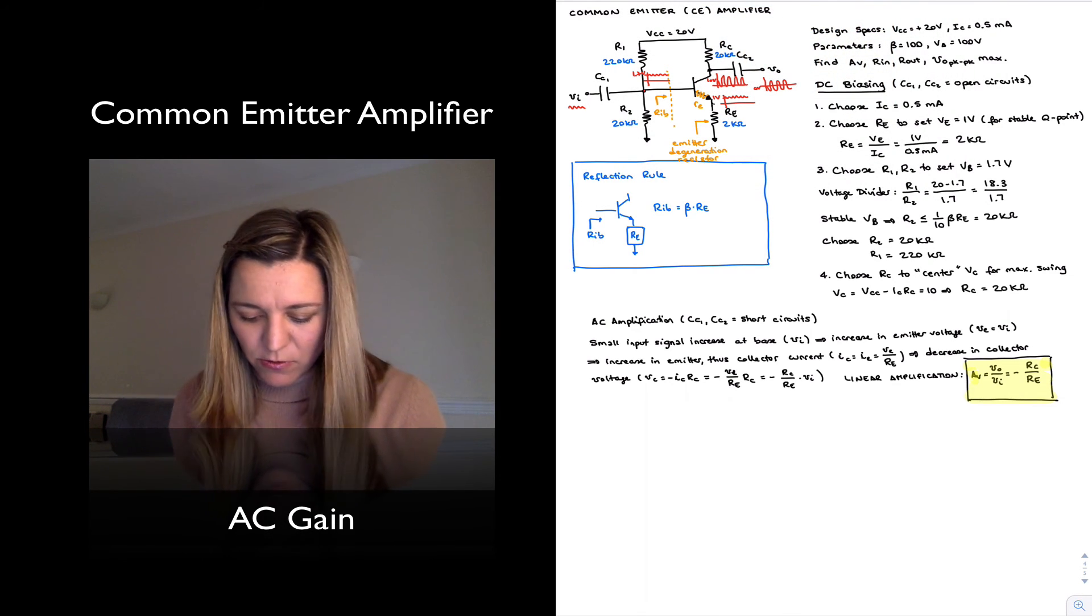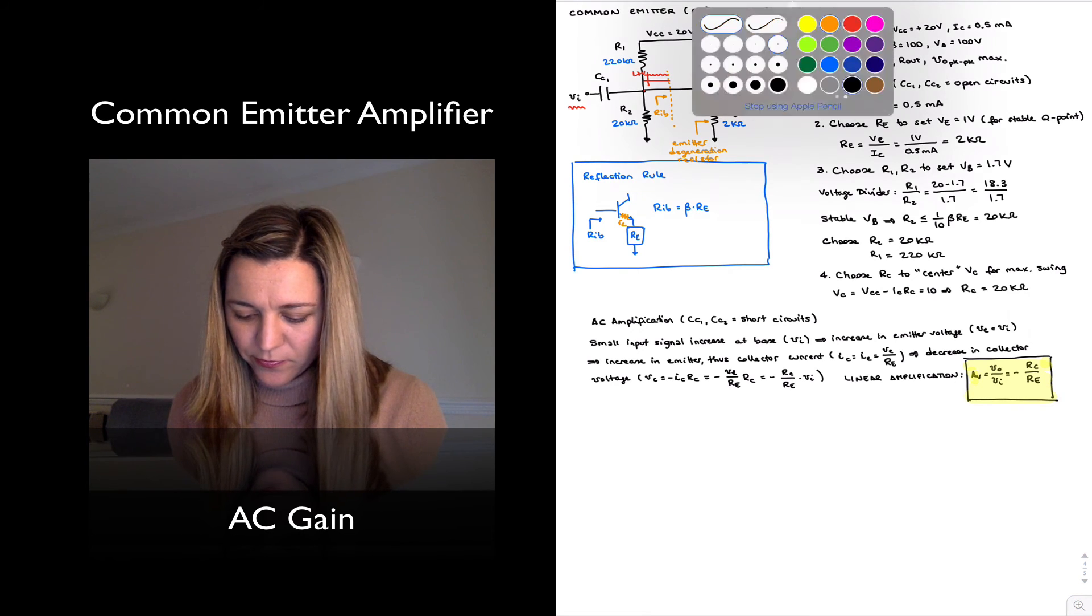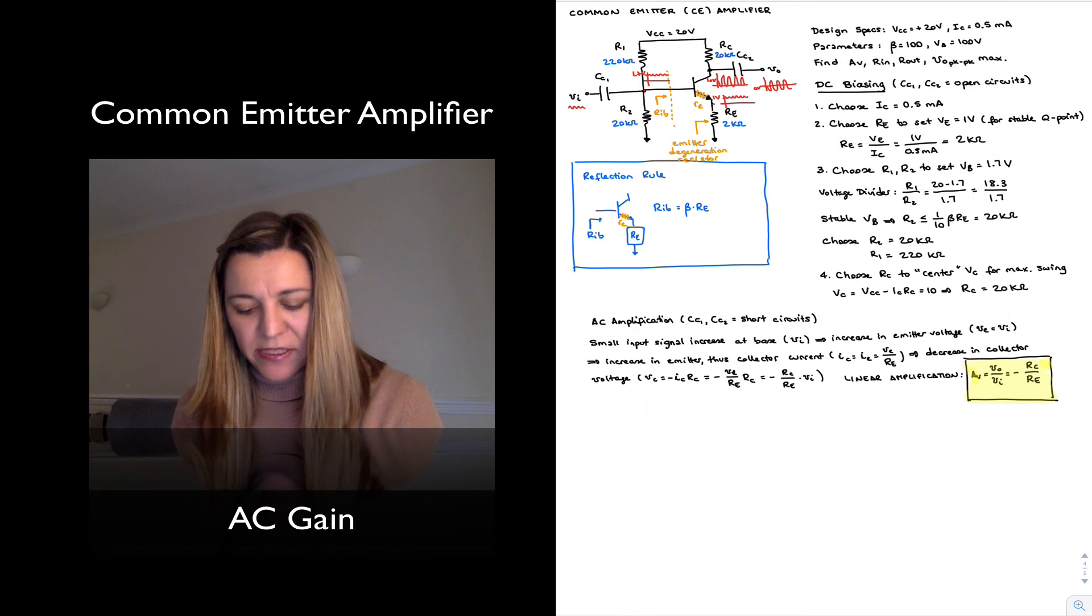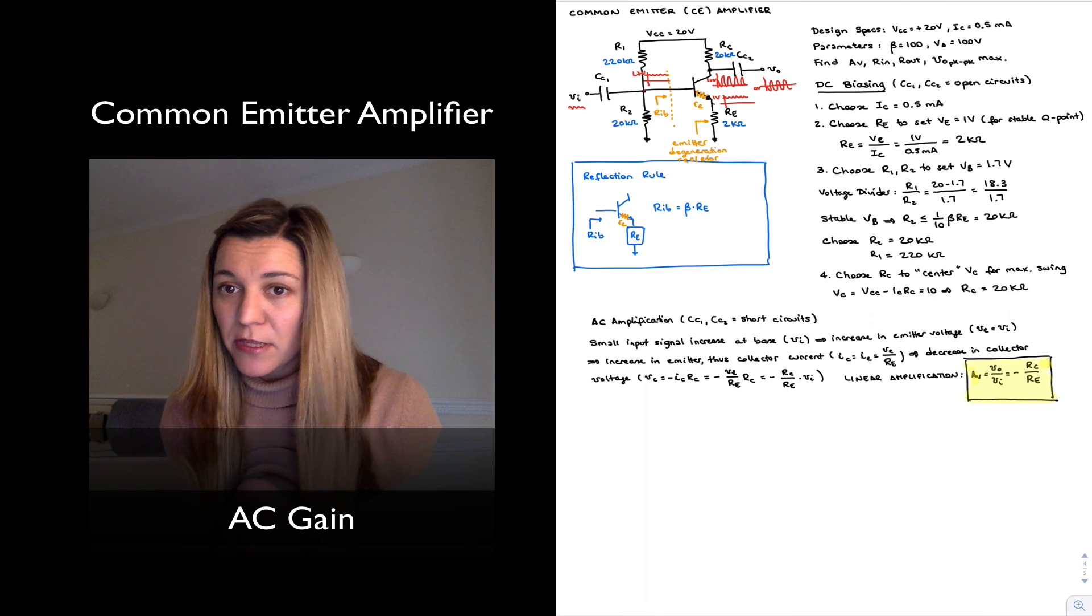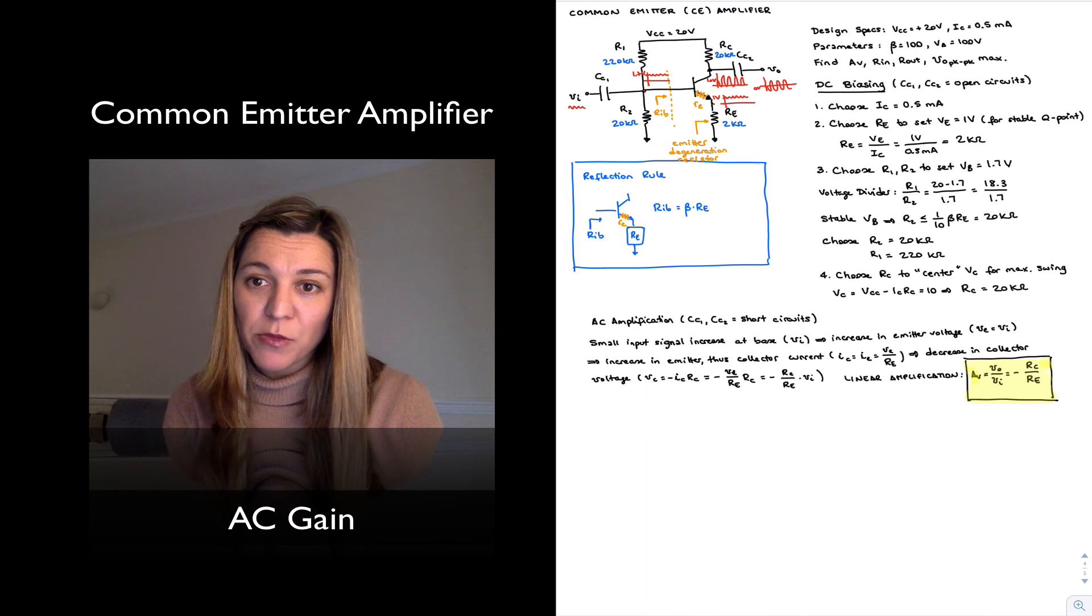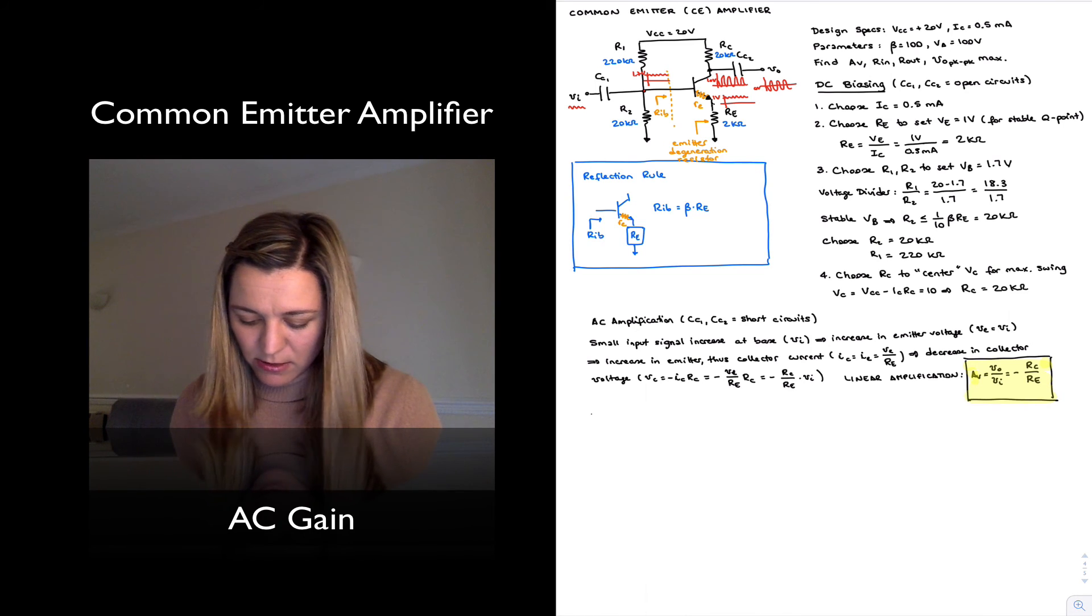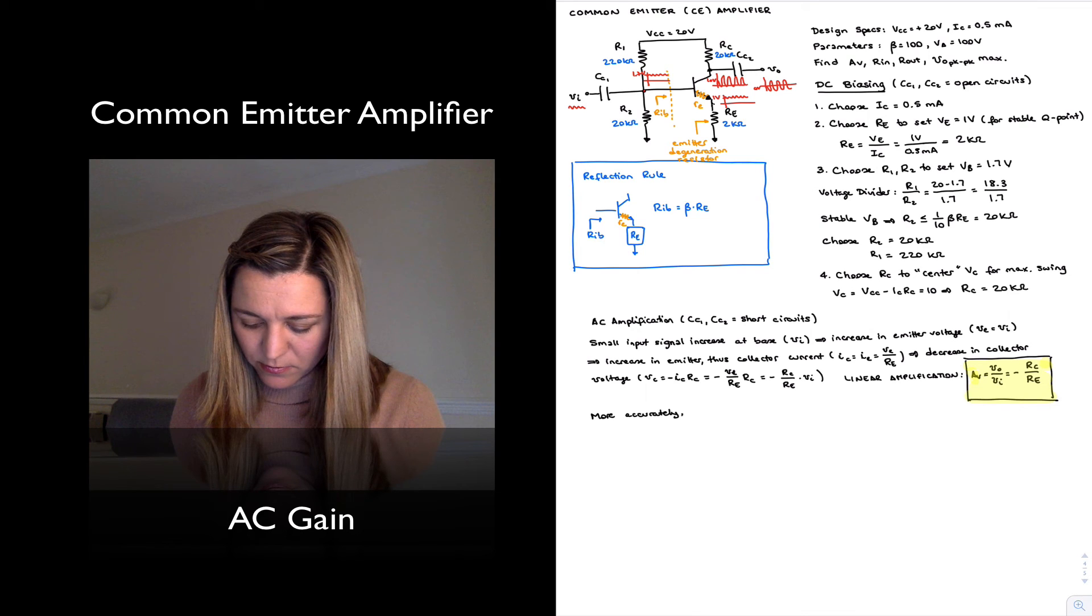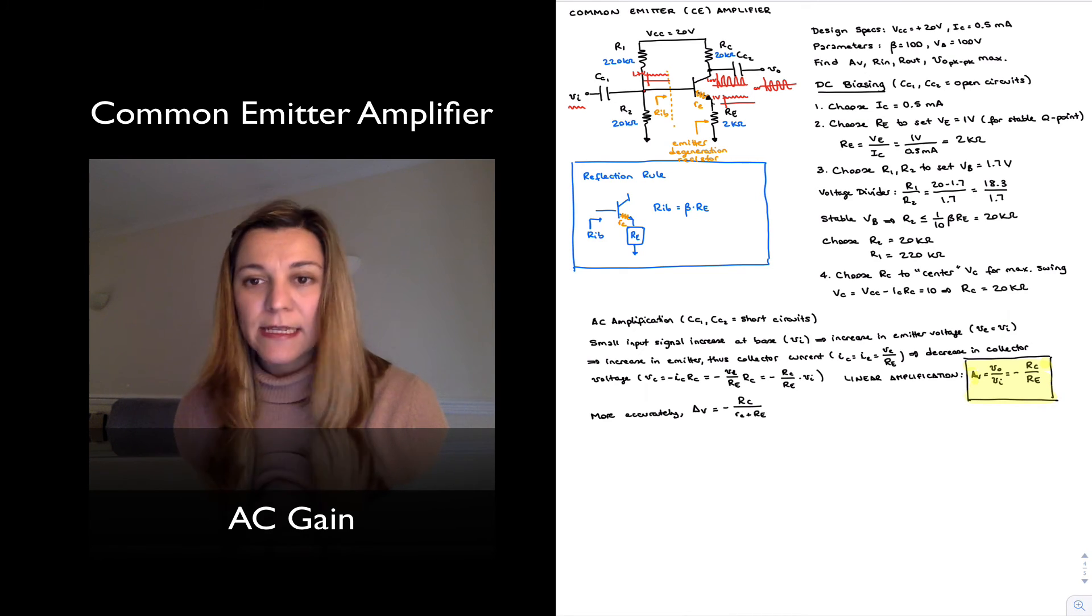We've also ignored it in our analysis here. But basically, the overall resistance connected to the emitter is not just capital RE, but actually the series combination of little re plus capital RE. So we could write more accurately the expression for the gain: negative RC divided by little re plus capital RE.